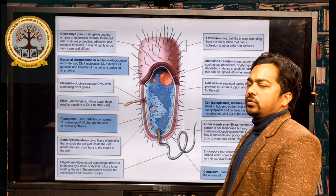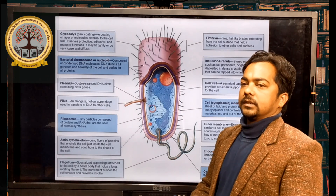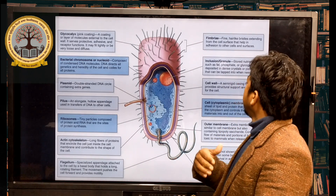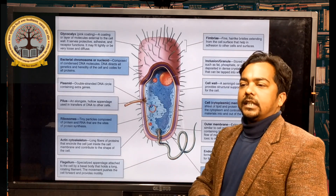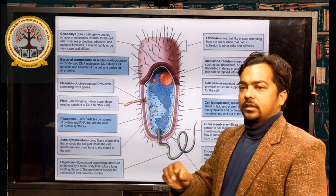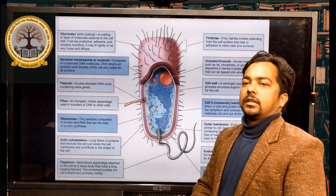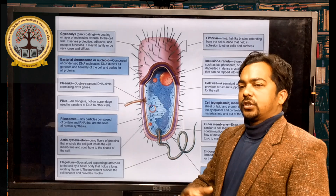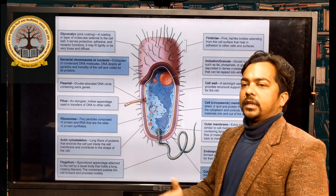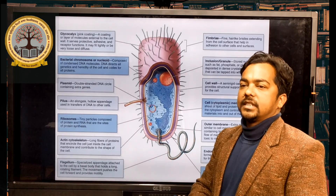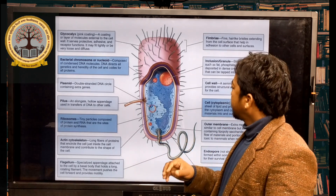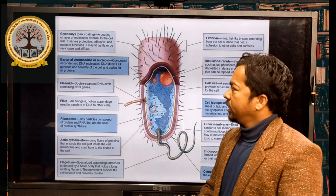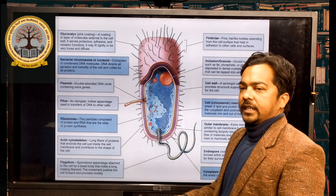Inclusion bodies mean storage — storage of phosphate and glycogen. Glycogen is the storage form of carbohydrates — like starch in plants, glycogen is the carbohydrate storage form in bacteria. Some bacteria have inclusion bodies.